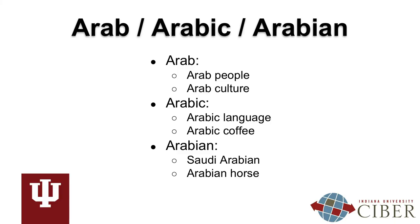As you now know the sounds that letters in the Arabic alphabet make, let's move on to these videos in the series. Before that, though, we want to mention the difference between the following terms: Arab, Arabic, and Arabian. Arab is a noun or adjective used in a wide variety of contexts, such as Arab people and Arab culture. Arabic is the name of the language spoken by Arabs and is sometimes used as an adjective, as in Arabic coffee. Arabian is an adjective which refers to Saudi Arabia, the Arabian Peninsula, or an Arabian horse.